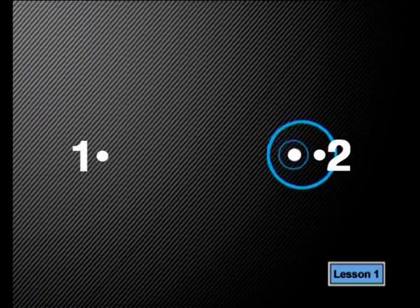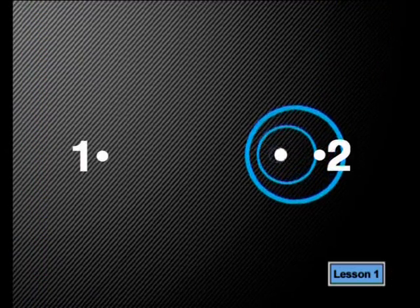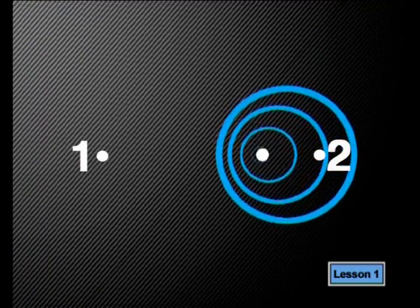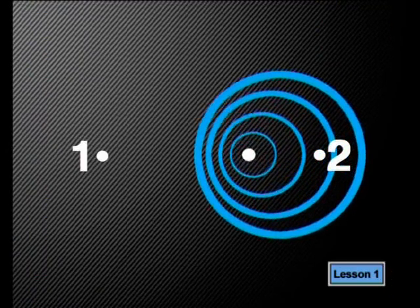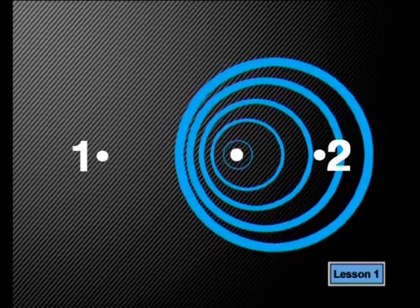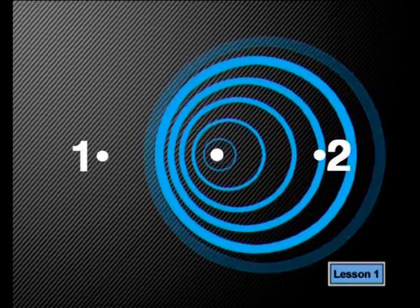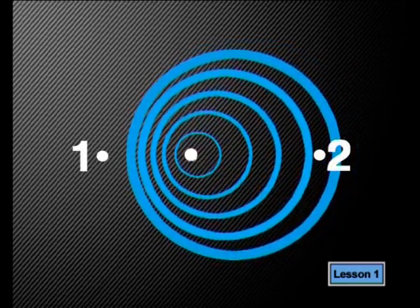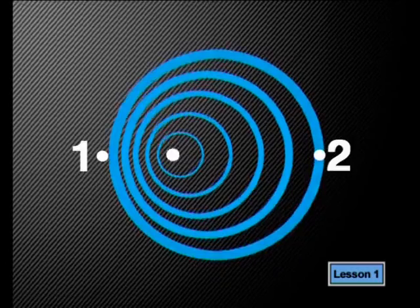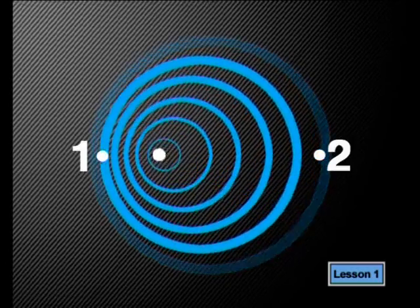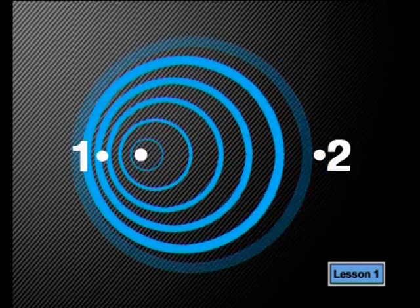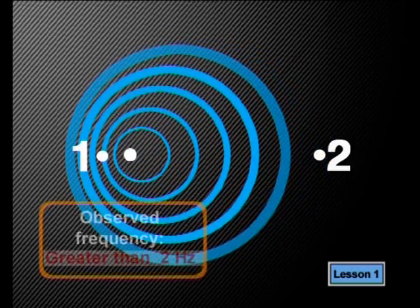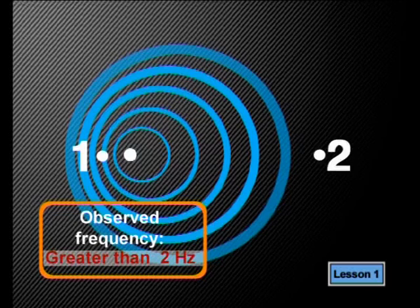Now let's see what happens when the source is moved to the left towards point one. Notice how the movement causes the ripples to make a different pattern in the water. The ripples moving from the source to point one have a short distance to travel and so arrive at point one sooner. The observer at point one would now see more ripples passing her each second — in other words, the ripples will arrive with a frequency greater than two hertz.